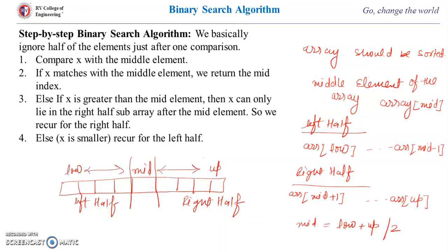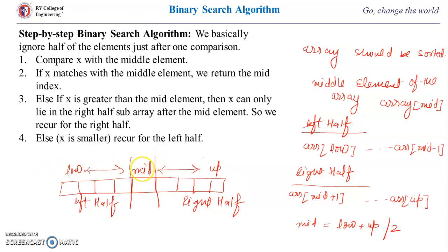So the procedure is: first find the mid element using low + up / 2, where low is the first index and up is the last index, and the array should be sorted. After finding mid, compare the item we want to search with the middle element. If it is less, search in the left half; if it is greater, search in the right half.